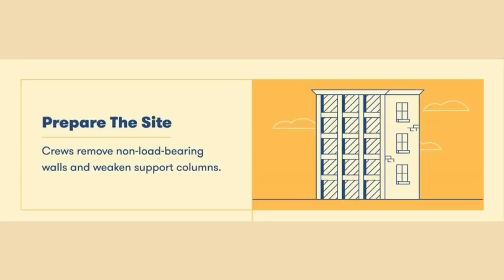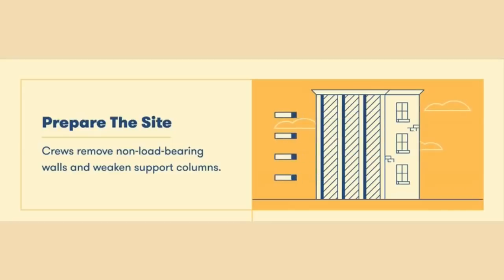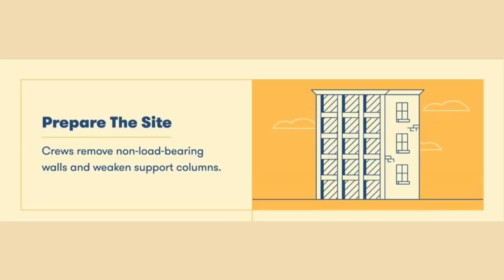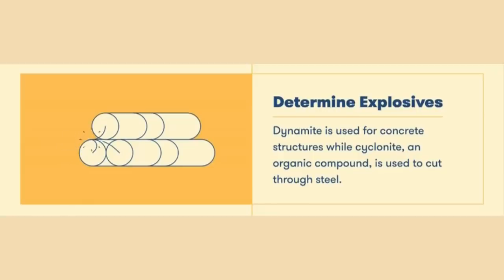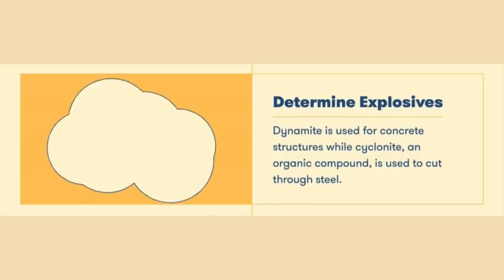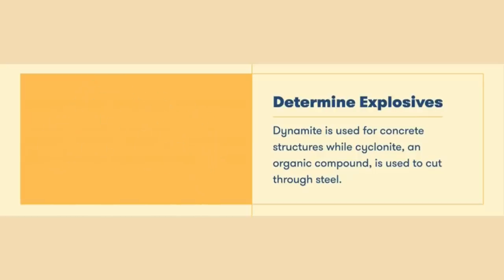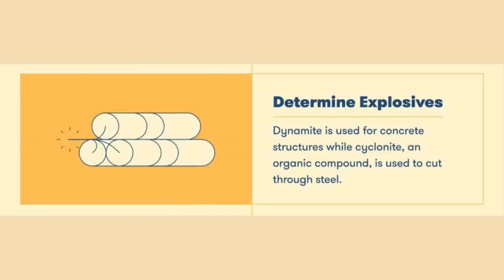Second, we have site preparation. In this step, crews prepare a site by taking out the non-load-bearing walls, weakening support columns, and wrapping columns with fencing in order to achieve a successful demolition with less flying debris. Third, determine explosives — blasters select an explosive based on the building materials, and they use dynamite, which releases a shockwave and is best used to demolish concrete columns.